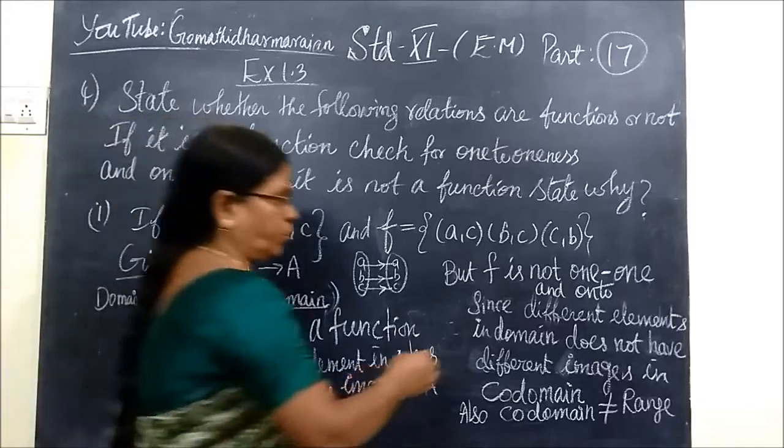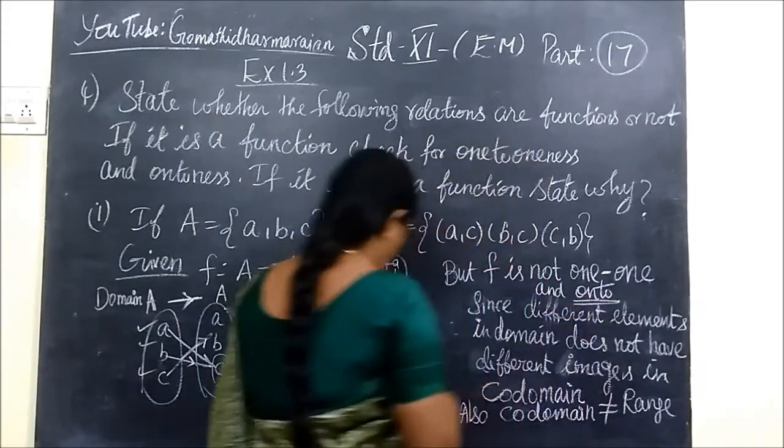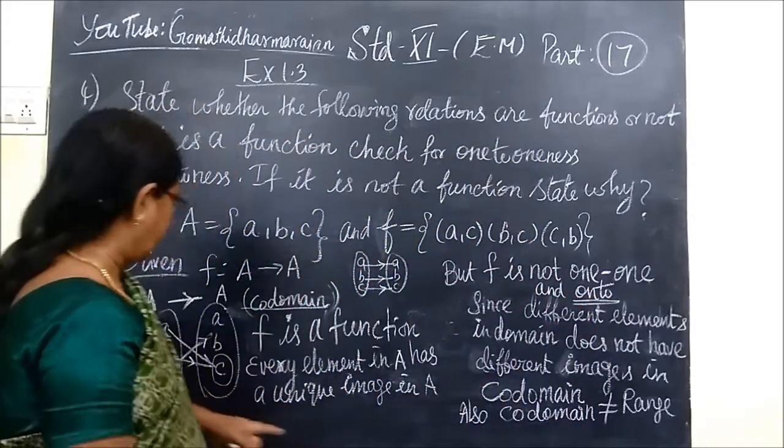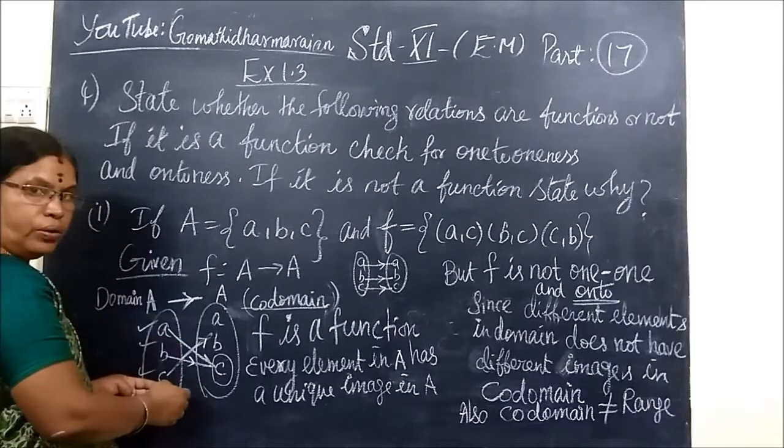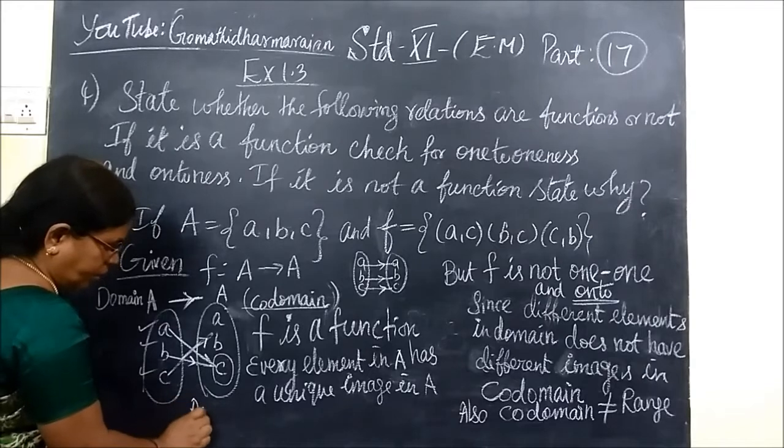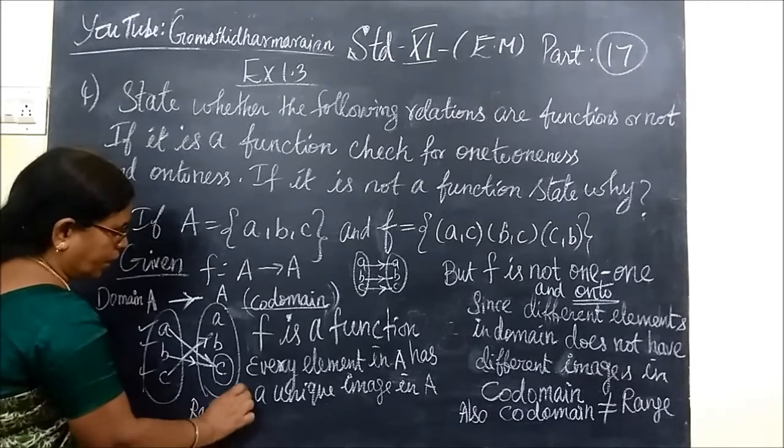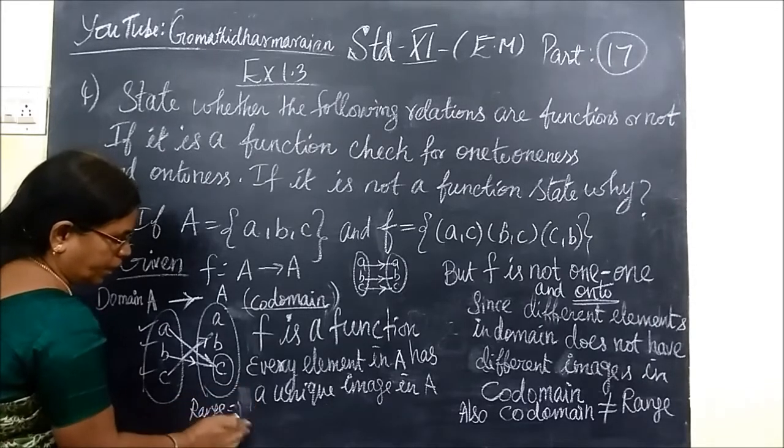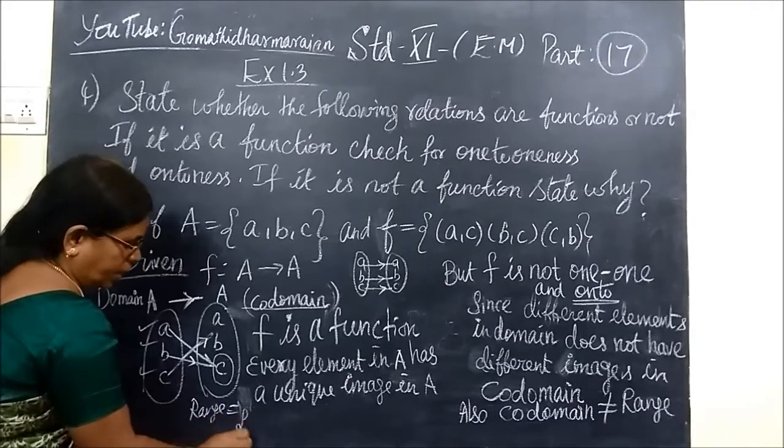And not onto. Onto means codomain and range are equal. This codomain and range are not the same. Range is C only. Range is equal to A, C.